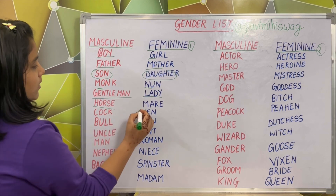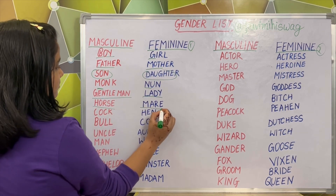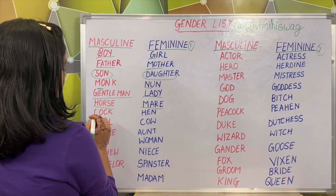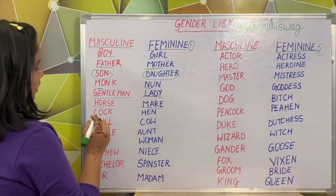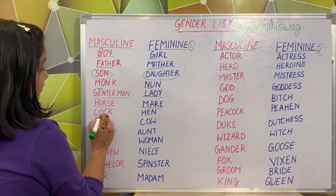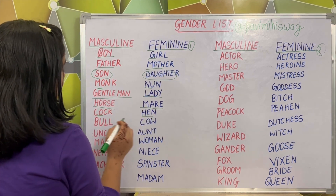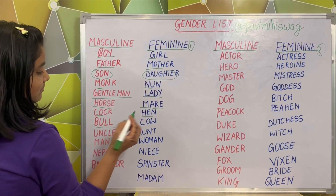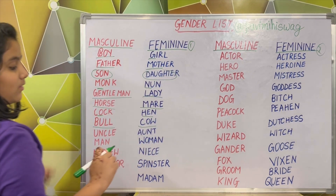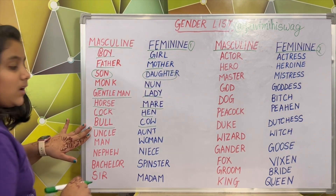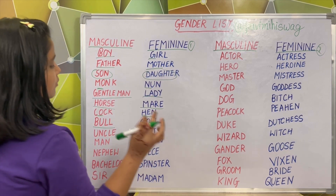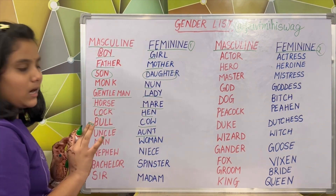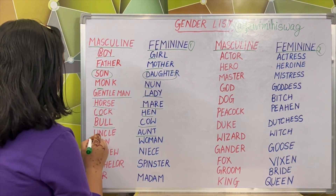Horse — mare. The feminine gender of horse is mare. Cock — hen. Wolf — cow. Uncle — aunt. We don't say auntie; we only write aunt in the English language.